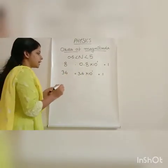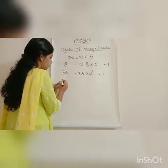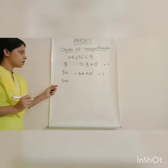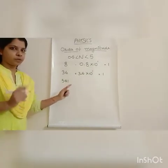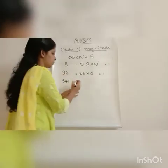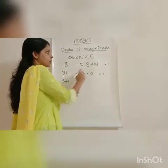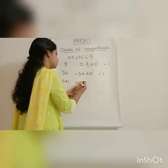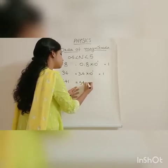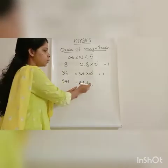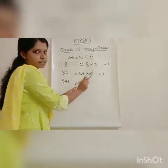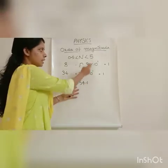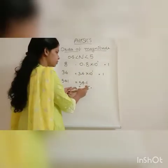Consider another example — the number 541. The magnitude 541 is greater than 5. If we put 54.1, that is placing a decimal mark after one digit, the magnitude is still greater than 5. So we have to further reduce the magnitude.